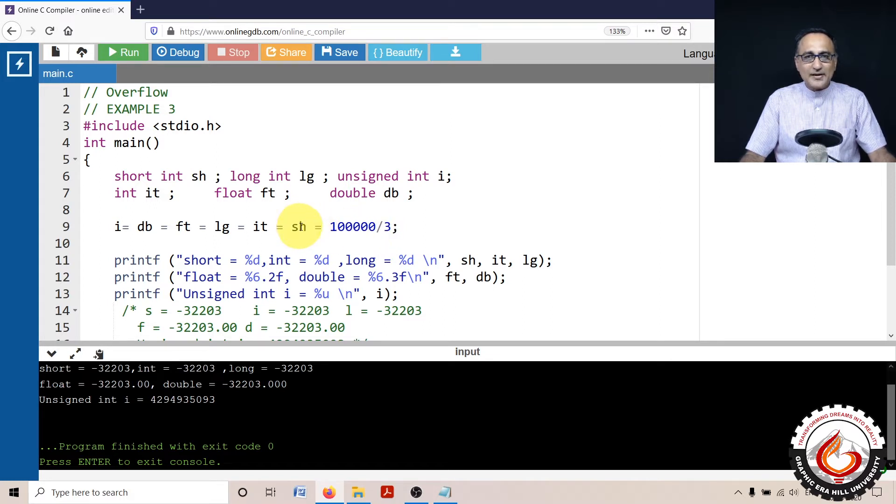SH stands for short int. Since short int on this particular machine on the online GDP compiler happens to be two bytes, the maximum capacity for a signed short int is 32,767. But the result of this is 33,000 something. So that number cannot be held in SH.